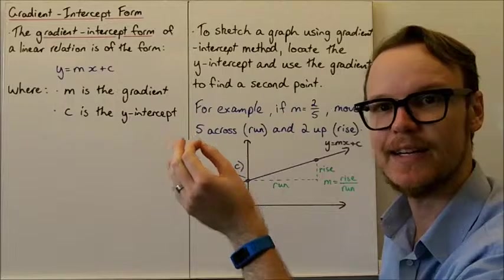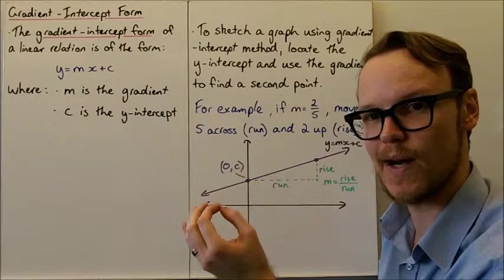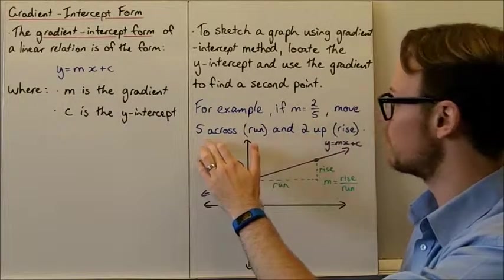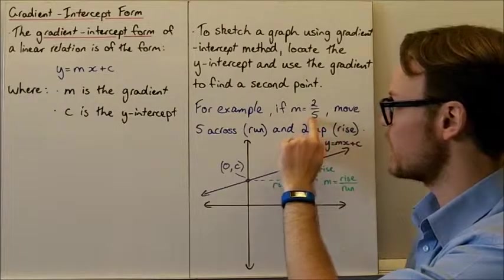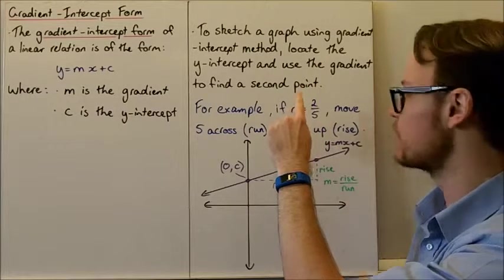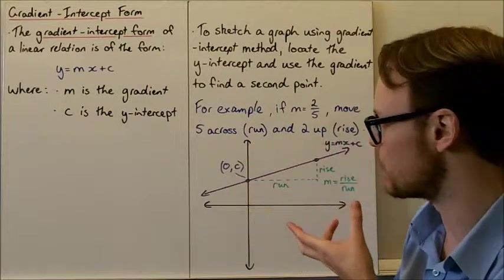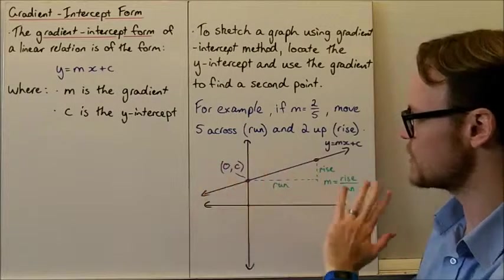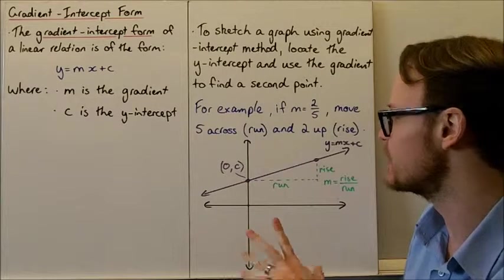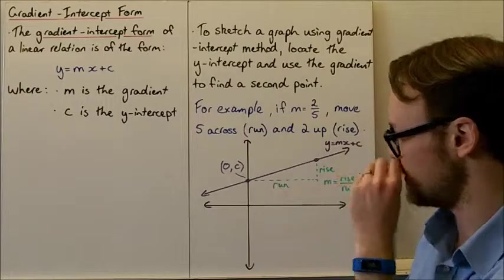If we locate our y-intercept, we move five across for our run, and two up for our rise, then we've got our two points. This is a graphical representation of this method.